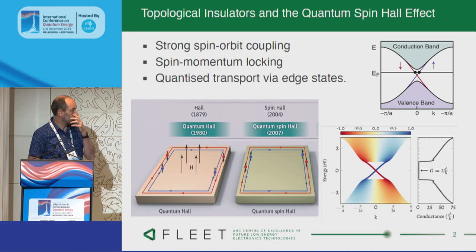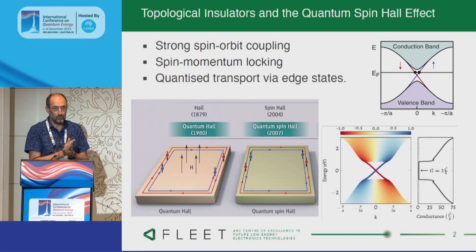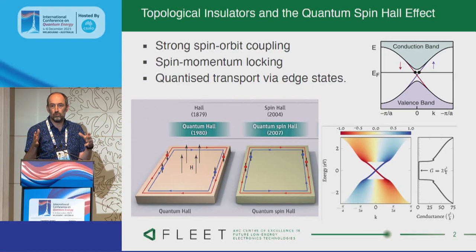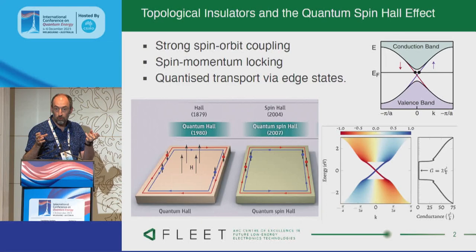I probably need to talk about what a topological insulator is. Some of you have done condensed matter in the last 10 years and know, and those who haven't probably don't. It's typically a material — an insulator or semiconductor — that has a large spin-orbit coupling, which means it has edge states and they're topologically protected edge states. You can think of it as a chocolate bar wrapped in aluminum foil: conducting on the surface, insulating on the inside.